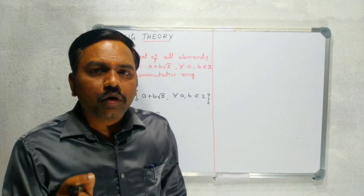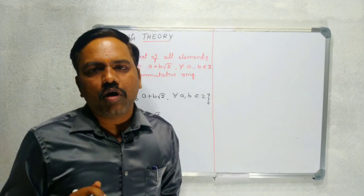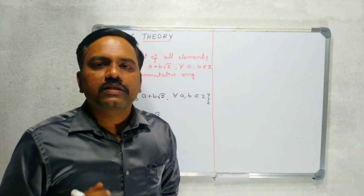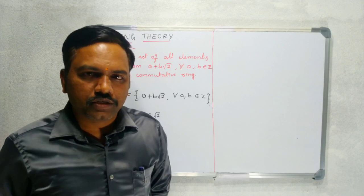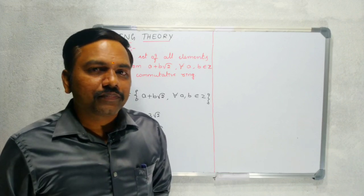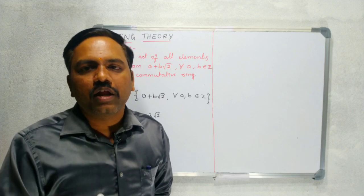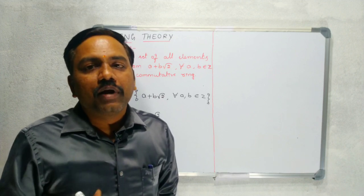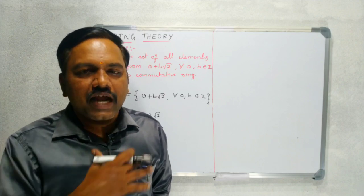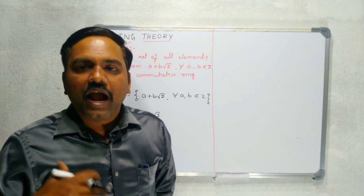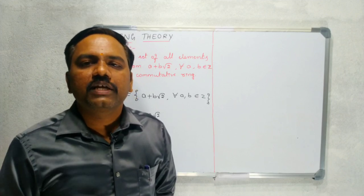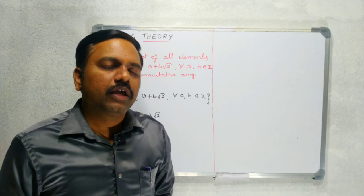When you say a set is a commutative ring, that set must be non-empty and it must satisfy the abelian group property with respect to addition. It must also satisfy the associative law with respect to multiplication, and multiplication must be distributive over addition. If the set satisfies these laws, we say that set is a ring. And if that set also satisfies the commutative law with respect to multiplication, then we conclude that set is a commutative ring.